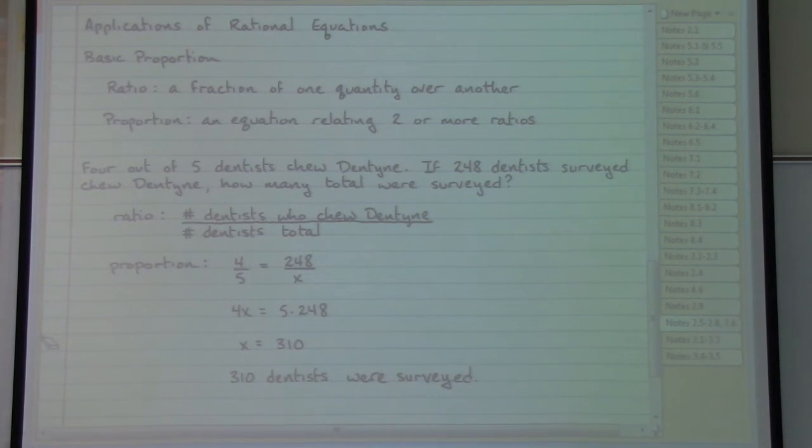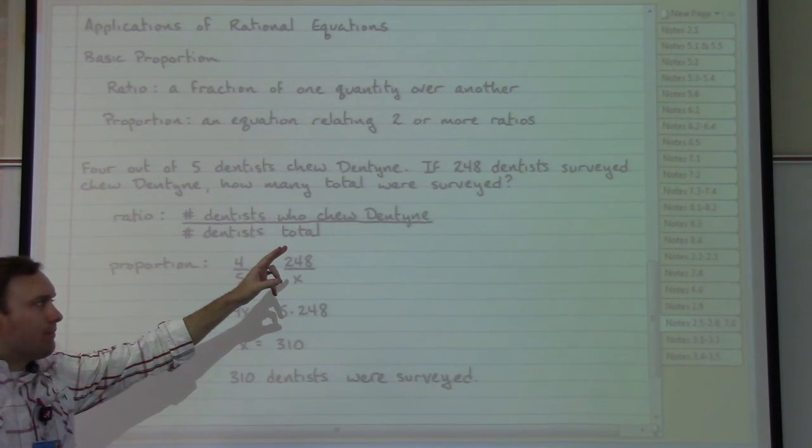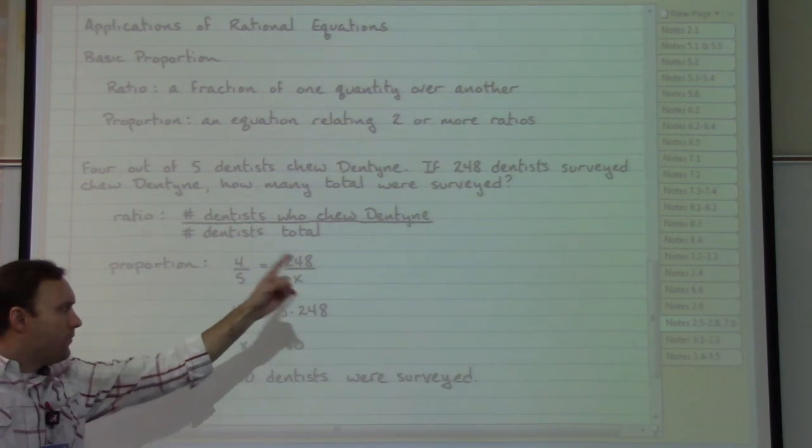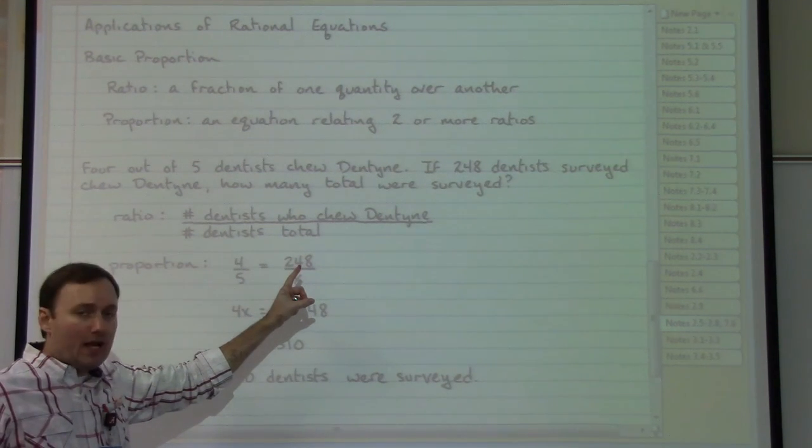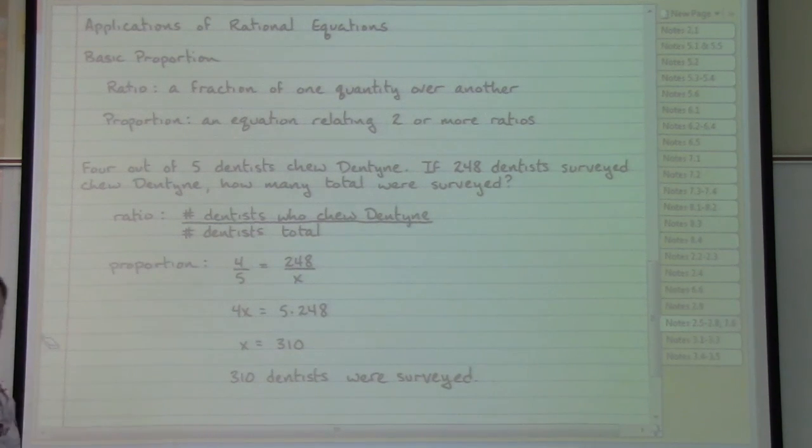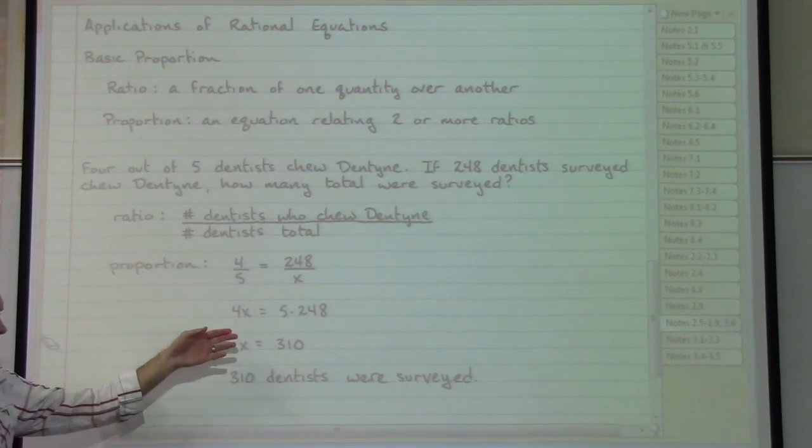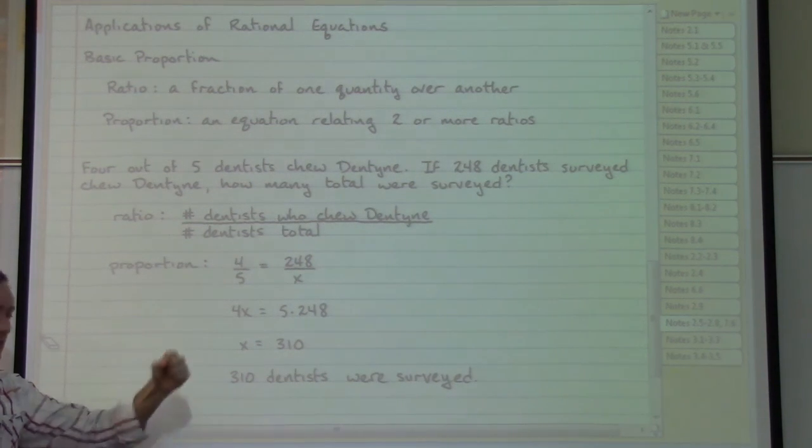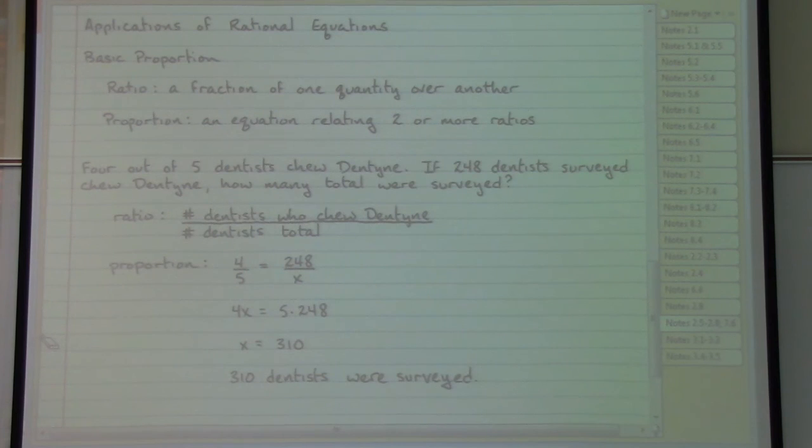In the first sentence, we're given two pieces of information that are connected to each other. Four dentists, specifically that chew dentine, out of a total of five dentists. With our second sentence, we can create another ratio using exactly that same construction. 248 dentists chew dentine, so that number goes on top. The unknown total number surveyed goes on the bottom. And when we have a situation like this, we can cross multiply. Four times X is equal to five times 248. And so for these specific types of problems, we have a little bit more direct map of how to work out our answer in order to come up with that final 310 dentists were surveyed.